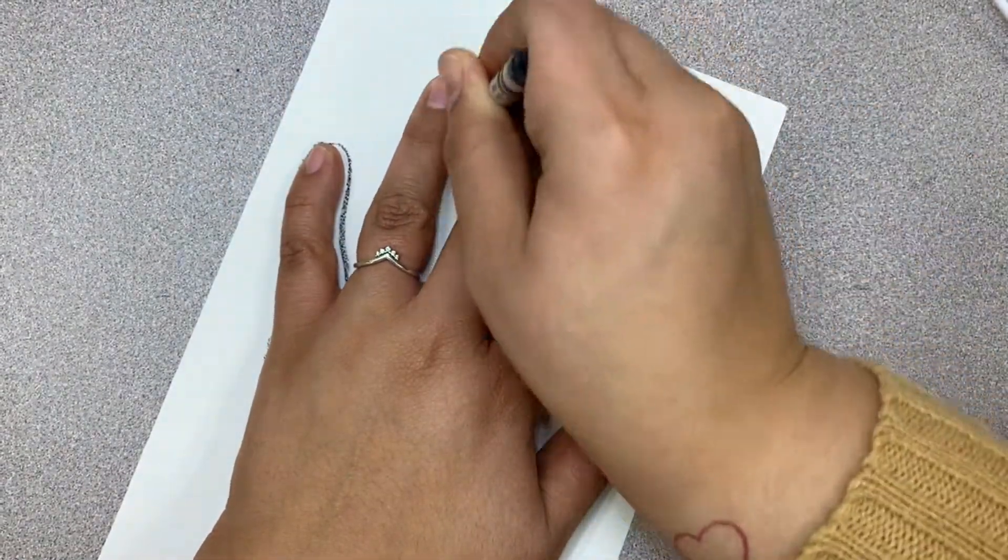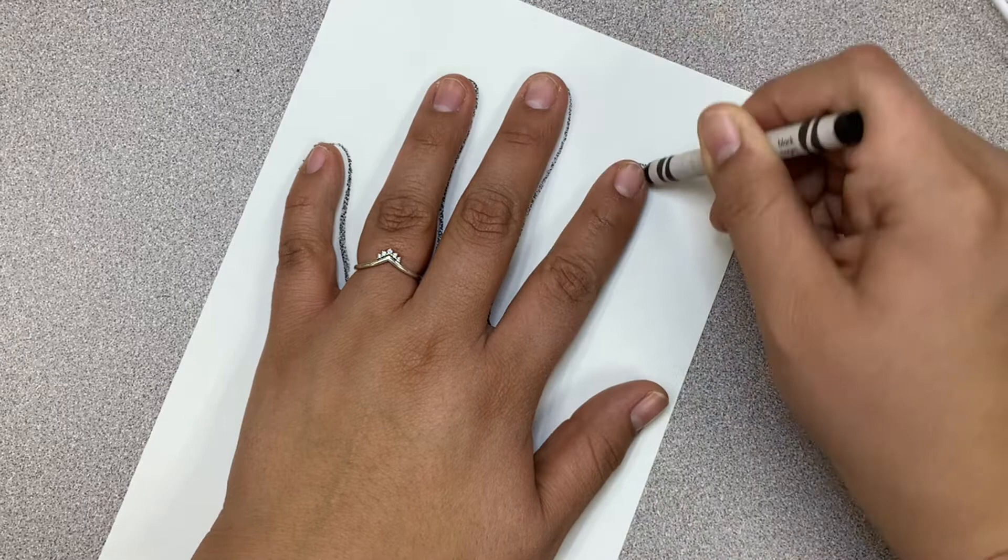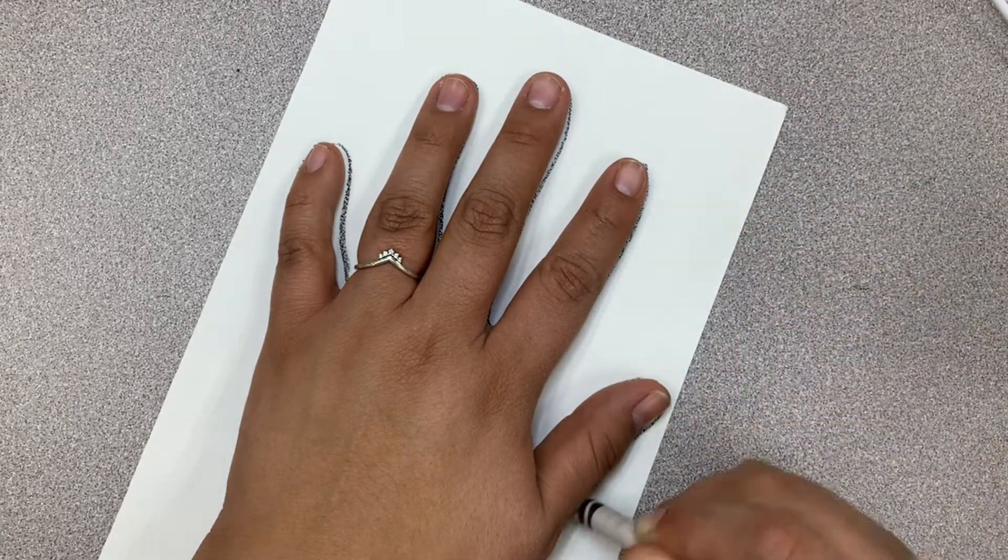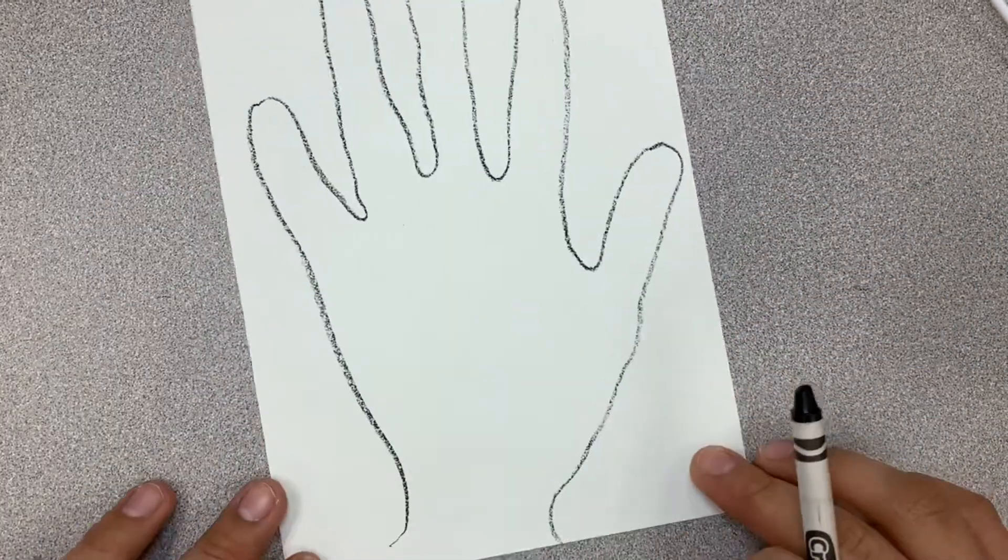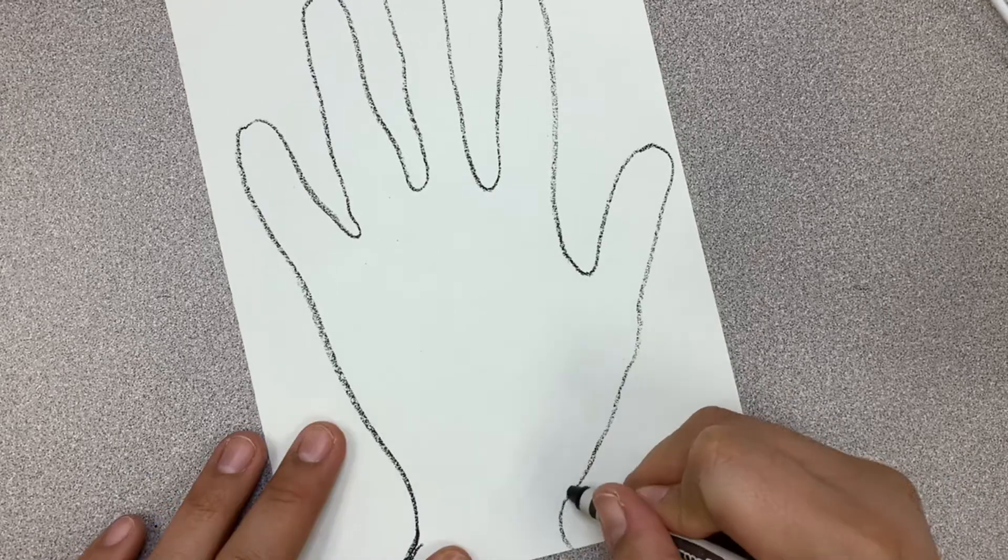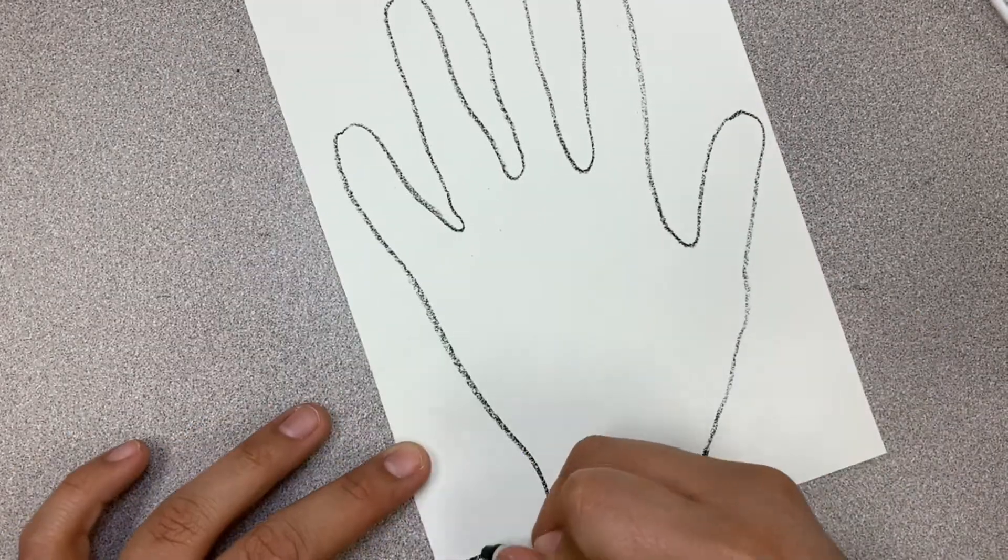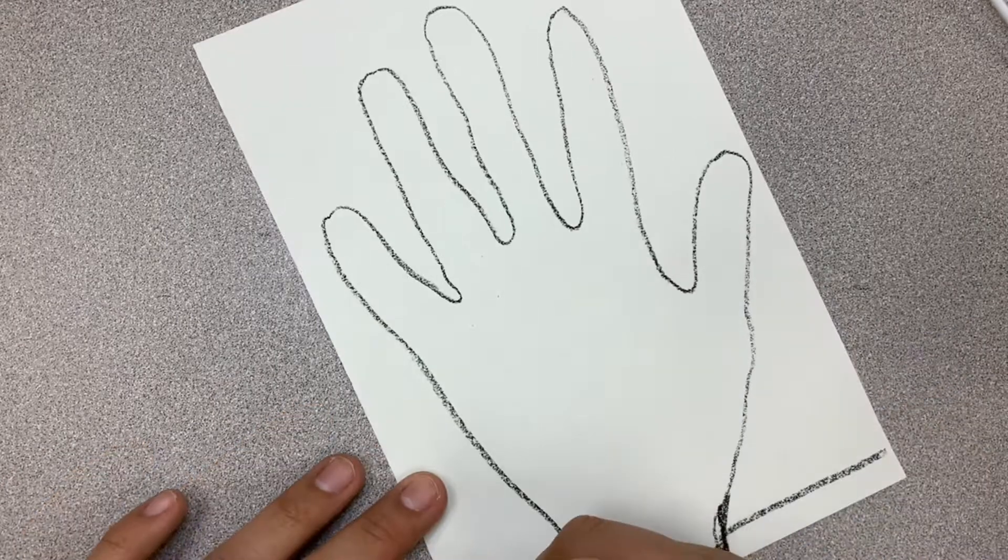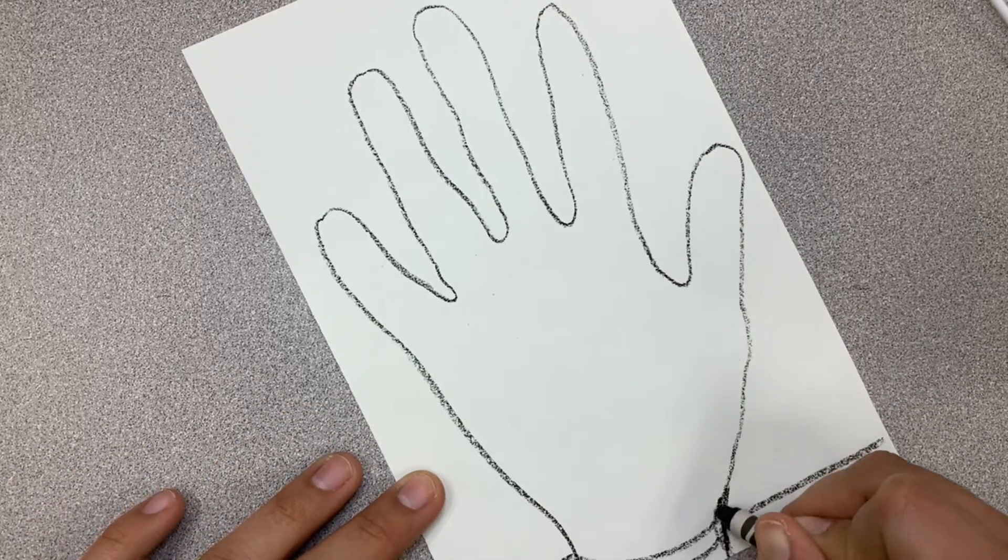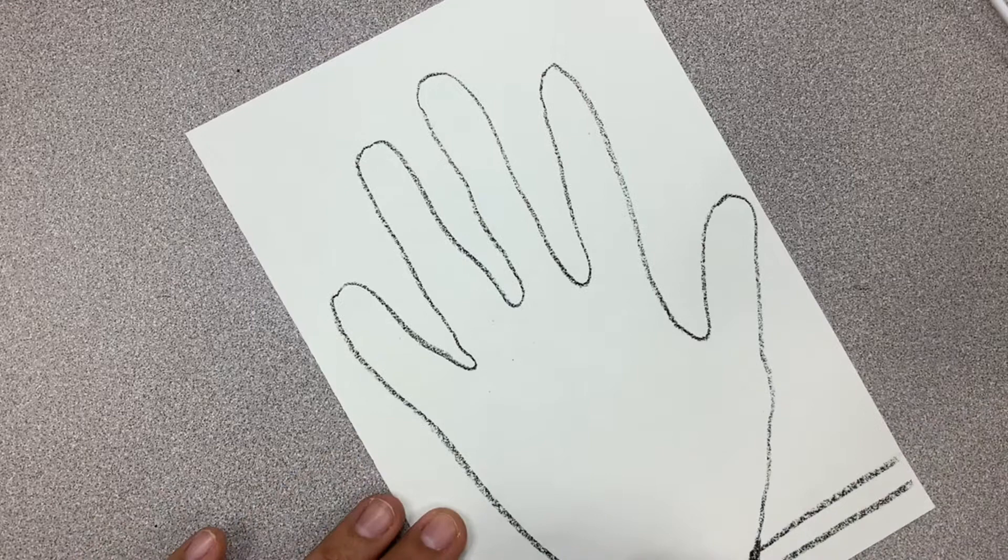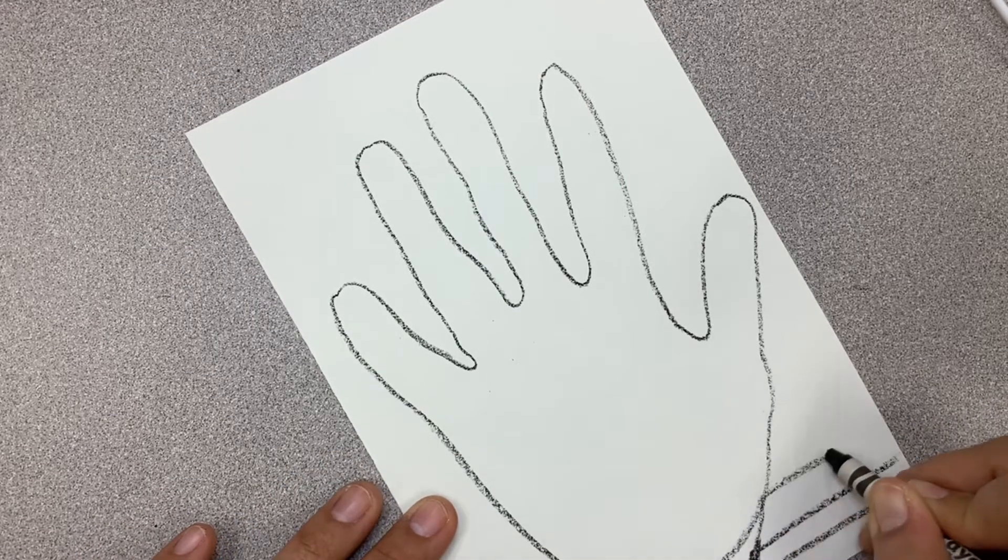All I'm going to be doing is tracing my hand. There we go, tracing my hand, tracing my hand. And it's that same thing. All you see me doing here is, once again, straight lines for the background, curved lines for the hand.